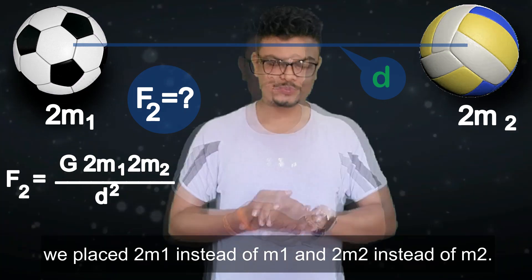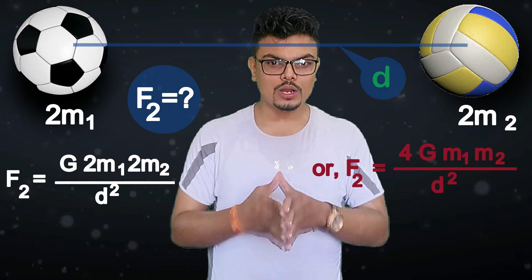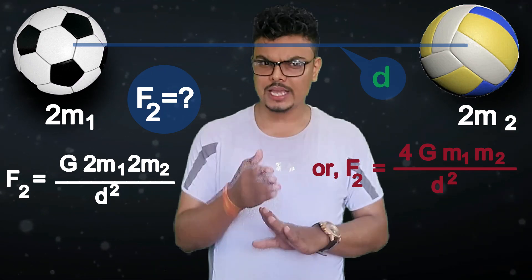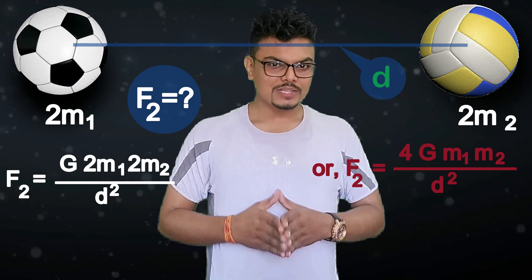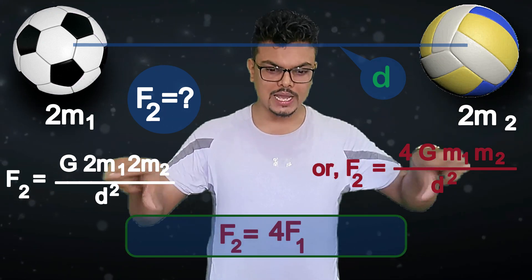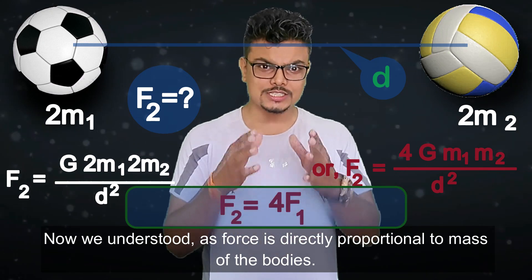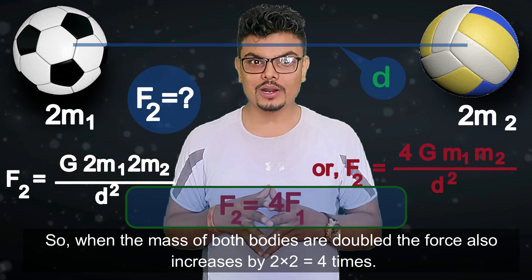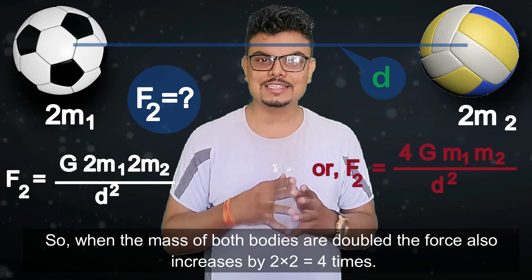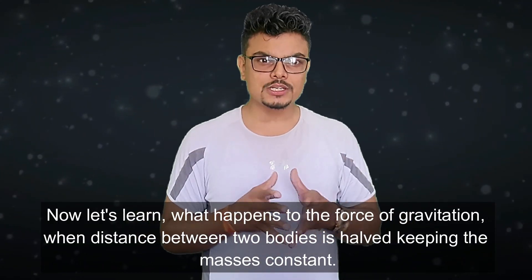We placed 2m1 instead of m1 and 2m2 instead of m2. After solving, we find F2 equals 4 times G times m1 times m2 divided by d squared, so F2 equals 4 times F1. Since force is directly proportional to the mass of bodies, when the mass of both bodies is doubled, the force increases by 2 times 2, which equals 4 times.